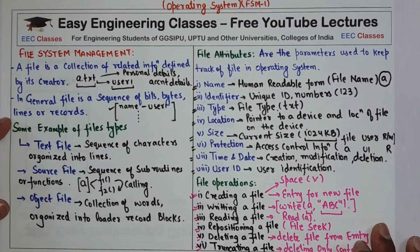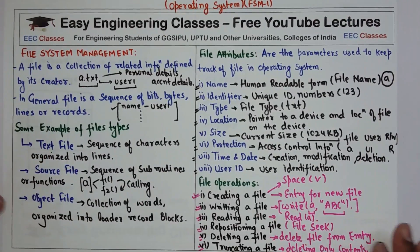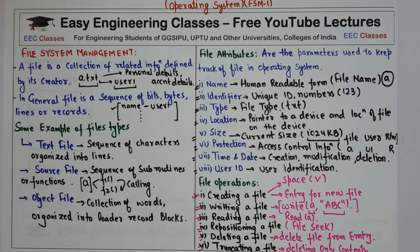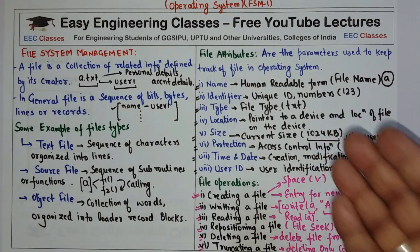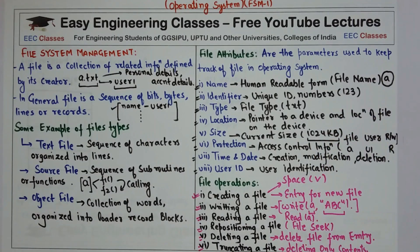This concludes the introduction of file system management in operating system. We covered the definition of a file, examples of file types, file attributes, and file operations. Thank you for watching the video — please subscribe to my YouTube channel for more such tutorials.